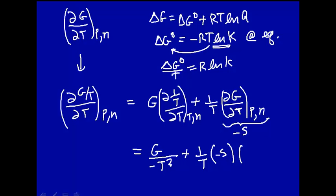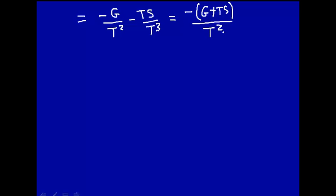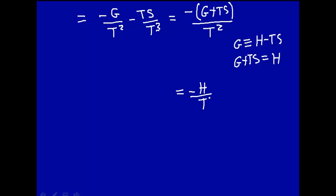Substituting -S and collecting terms — multiplying through by T/T to get T² in the denominator — we end up with -G/T² - TS/T², which equals -(G + TS)/T². Remember that G = H - TS, so G + TS = H. Therefore this simplifies to -H/T². So how free energy divided by temperature changes with temperature is related to the enthalpy.